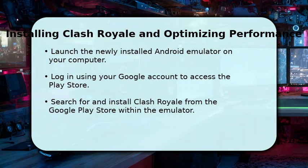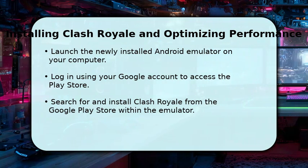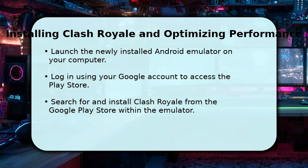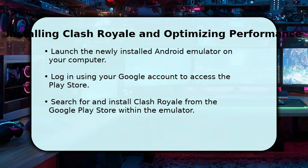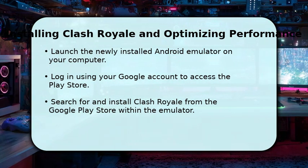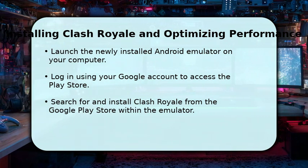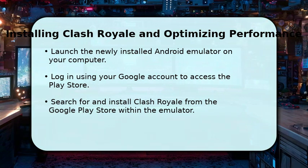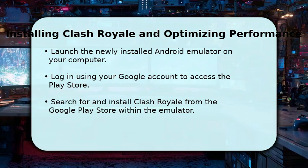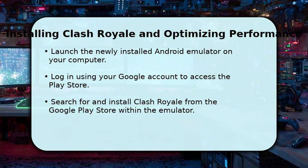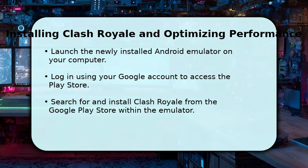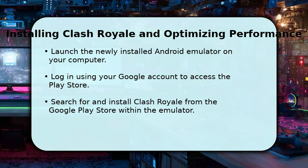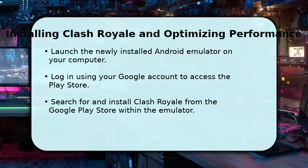With your emulator installed, you're almost ready to battle. Open the emulator and sign in with your Google account, just like you would on a new Android device. Then navigate to the Google Play Store within the emulator, search for Clash Royale, and install it. For the best experience, take a moment to adjust the emulator's settings, such as allocating more RAM or CPU cores if your system allows. This will help ensure smooth gameplay and a fantastic Clash Royale experience on your personal computer.